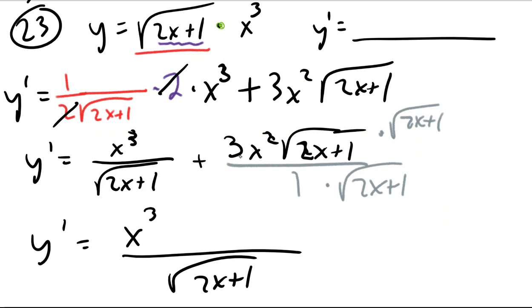So I get x³ plus 3x² times the square root of 2x plus 1 times the square root of 2x plus 1, which is just going to be 2x plus 1.